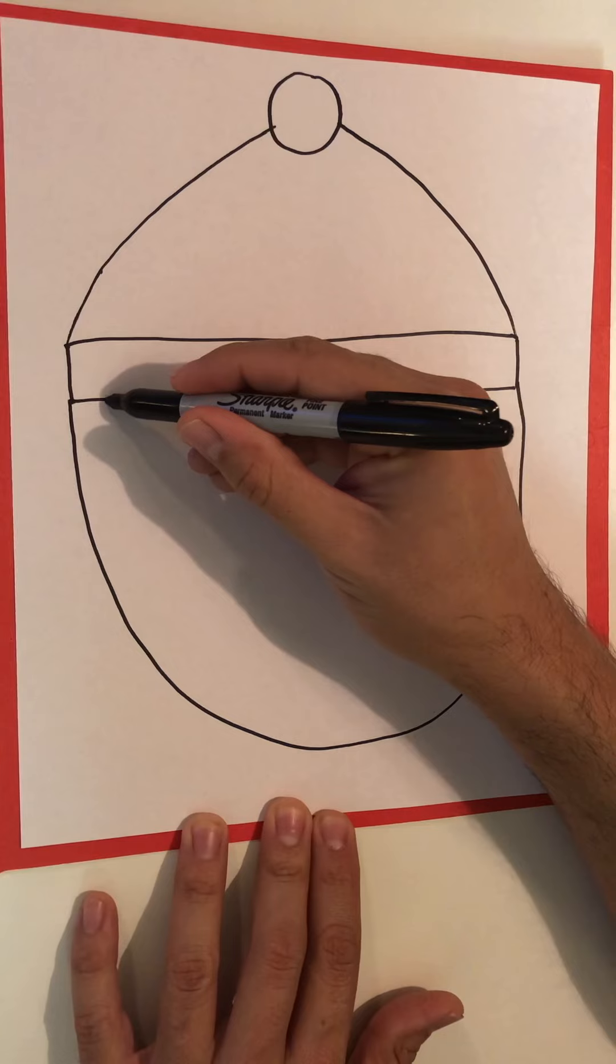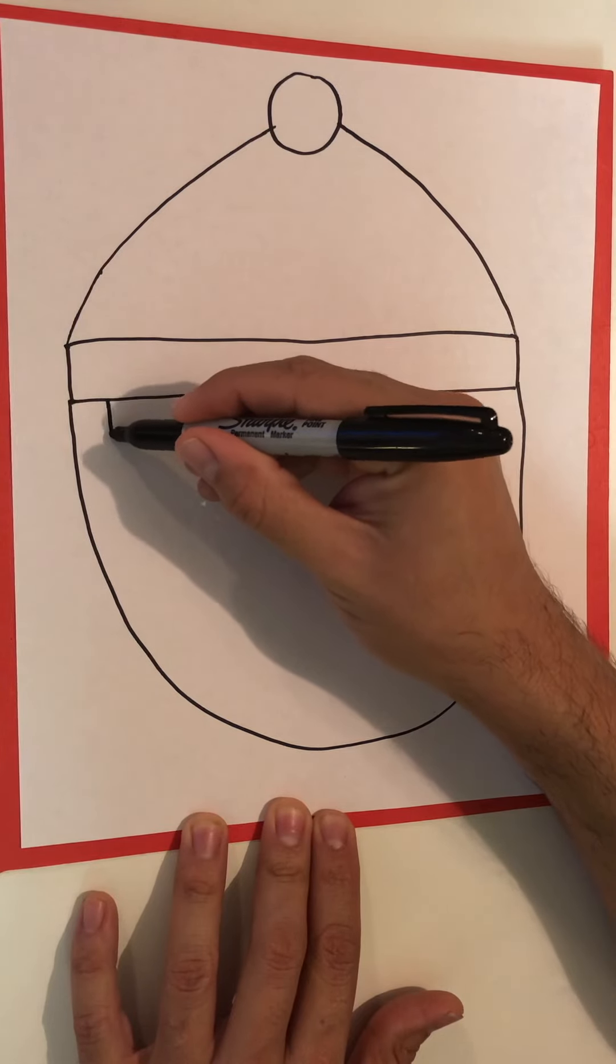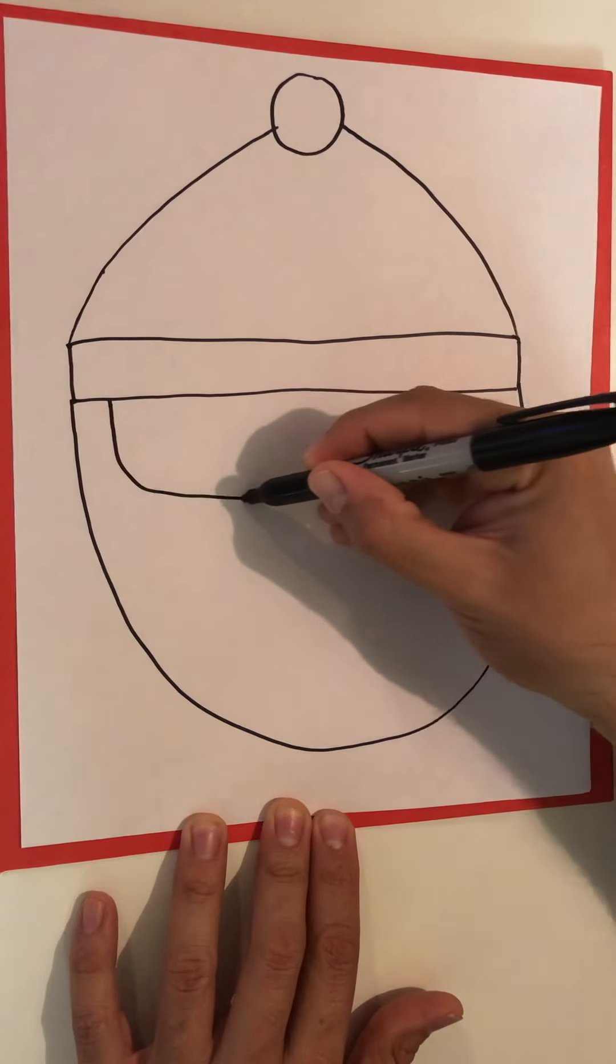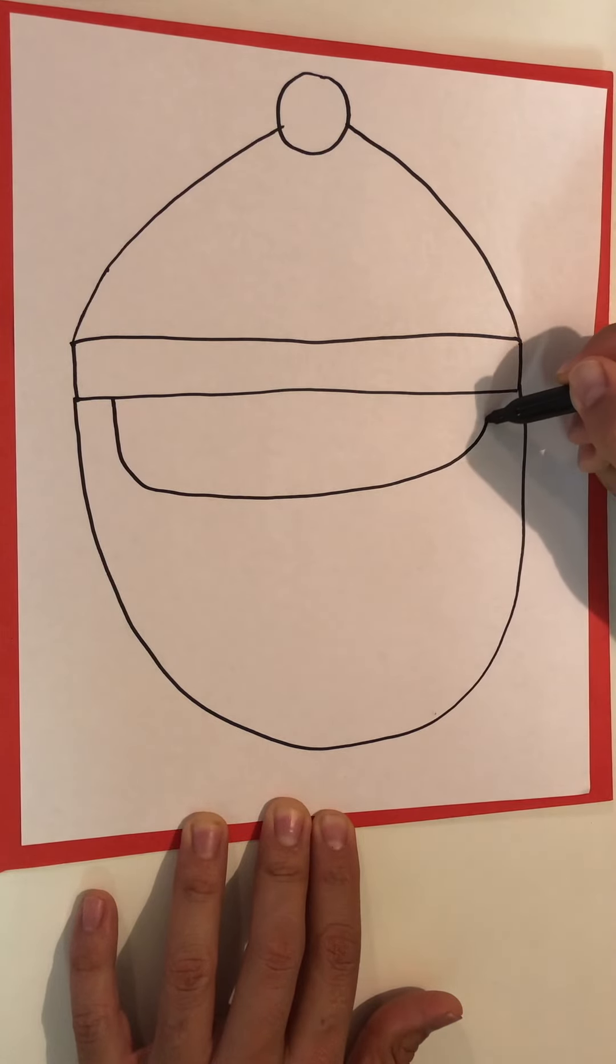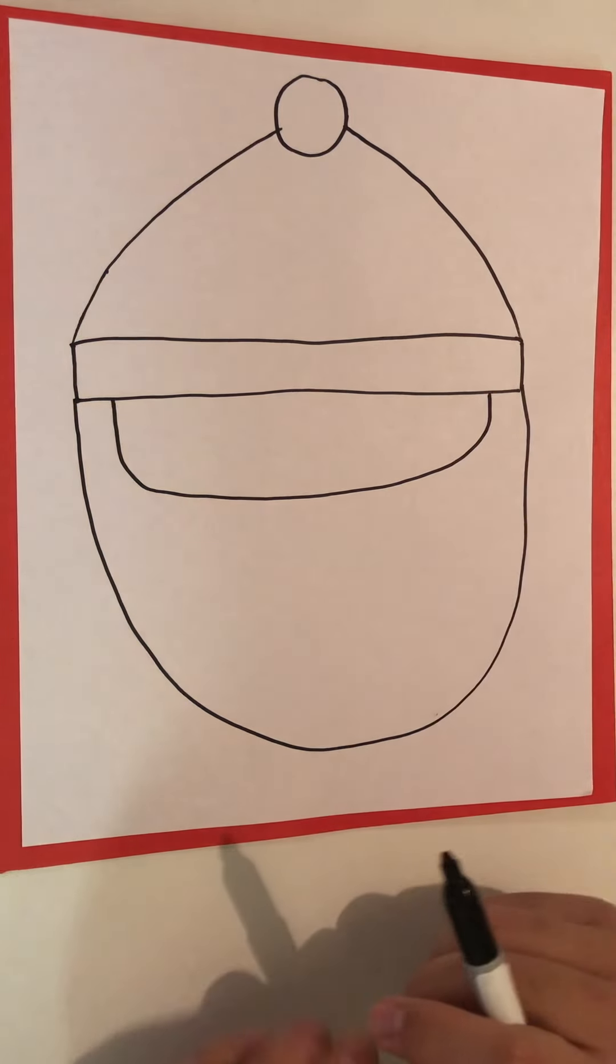We're going to start here and go down and make a small U. You guys can go ahead and make a small U-shape like that.